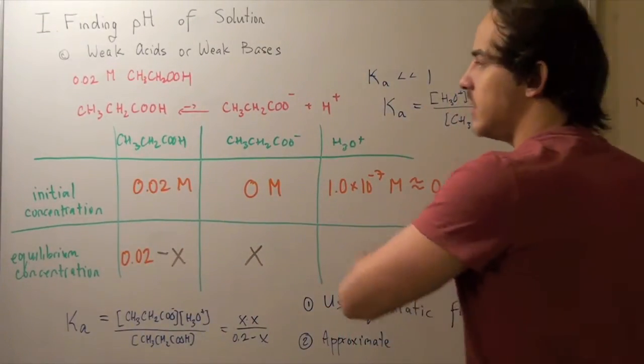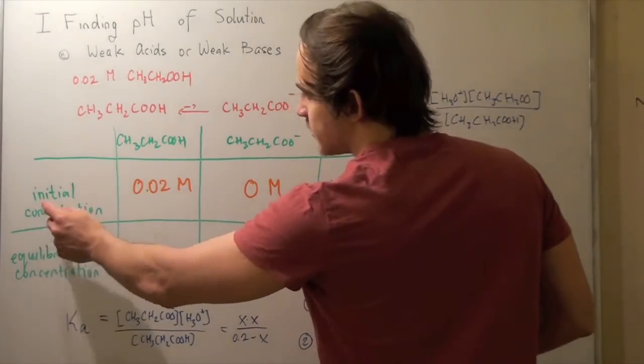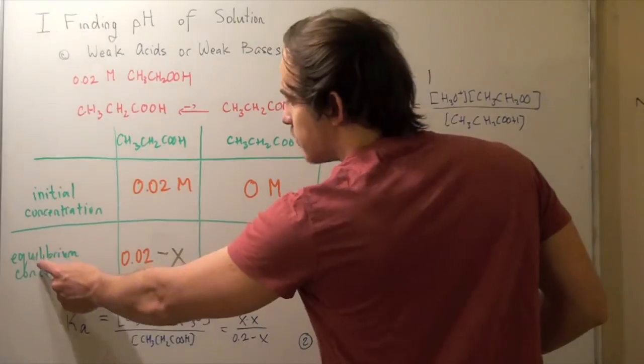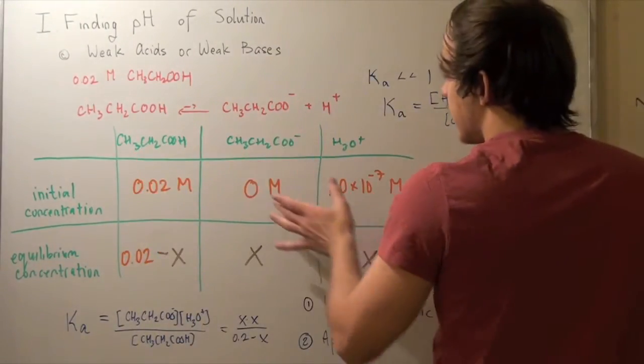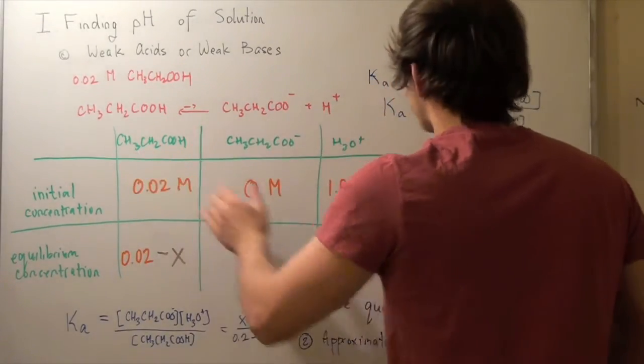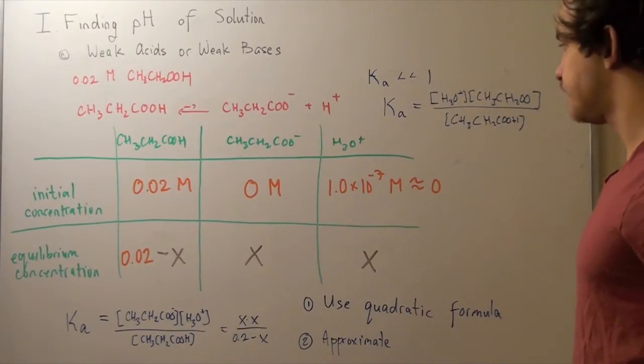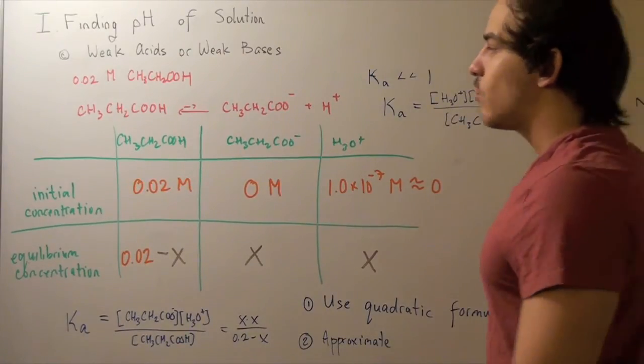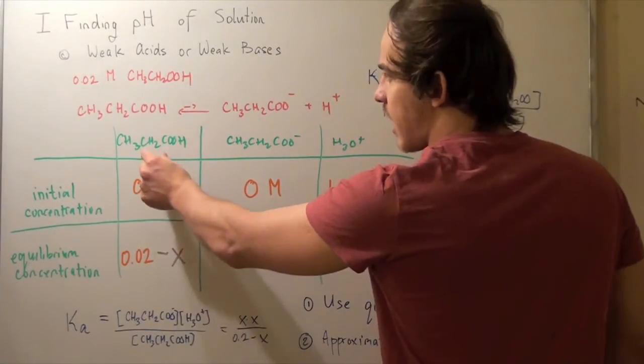So let's set up a table. In our table, we have the initial concentration and the equilibrium concentration. We also have this guy here, the ion, and the hydronium ion. Now only these guys matter because they are found in the equilibrium expression. So, our initial concentration is 0.02 molar of this guy. That's given.